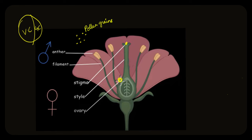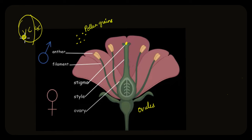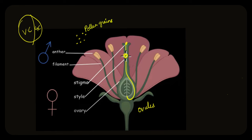It is within the ovary, specifically inside lobe-like structures called the ovules, where the female gamete is present. Somehow the male gametes have to reach the ovules to fuse with the female gametes. The vegetative cell solves that problem by forming the long pollen tube. As the pollen tube is formed, the generative cell divides and forms two male gametes, which then travel down the pollen tube and reach the ovules.